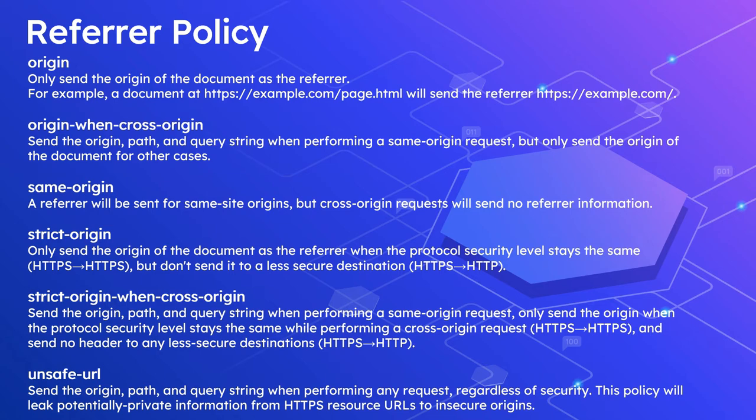The next value is strict-origin: only the origin of the document is sent as the referrer when the protocol security level stays the same — HTTPS to HTTPS — but it won't send anything for a less secure destination, meaning if the source page is HTTPS and the sub-resources or links are HTTP, the referrer header will not be set. The next value is strict-origin-when-cross-origin: this sends the origin, path, and query string for same-origin requests, but only sends the origin for cross-origin requests when the protocol security level stays the same (HTTPS to HTTPS). It won't send any header to a less secure destination (HTTPS to HTTP), but for same-origin requests, irrespective of protocol level, it will send the referrer header details.